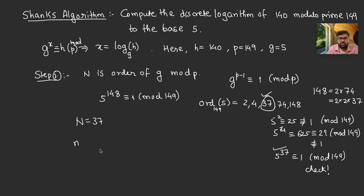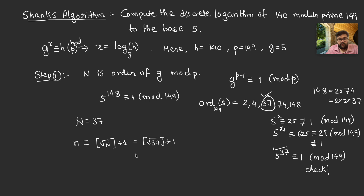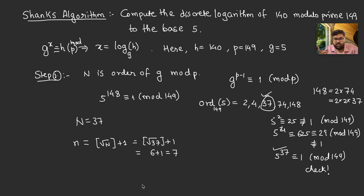Step 1 is to find small n = ⌊√N⌋ + 1, where N is the order. So we compute ⌊√37⌋ + 1. Since √36 = 6, √37 is just over 6, giving 6 + 1 = 7. So our two lists each have length n = 7, and for the baby-step list we compute g^i for i = 0 up to 7.